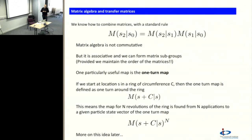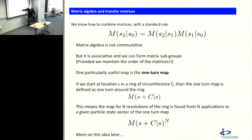A useful map is the one-turn map — a very powerful and central object in beam dynamics, which we'll study in about three weeks. We start at some location s in a ring of circumference C. The one-turn map is defined as the map — or matrix — for one turn around the accelerator back to the same point. I can find it by multiplying all the elements in the whole ring back to the same point. It's defined as the map from s to s plus C. This means that to do n revolutions of the ring, I apply the same map n times. We'll use this to define stability of rings.